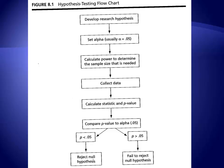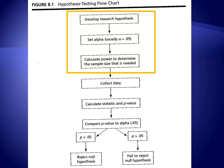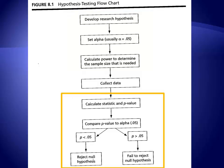This is typically what the hypothesis testing flowchart looks like. The first three boxes in the flowchart relate to activities that are done before data are even collected. In this class, we will focus on the steps that are completed after collecting data.